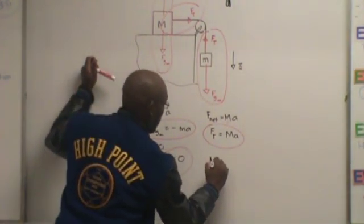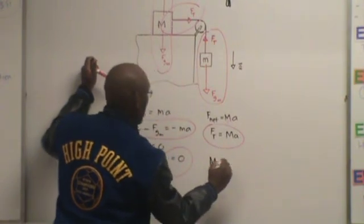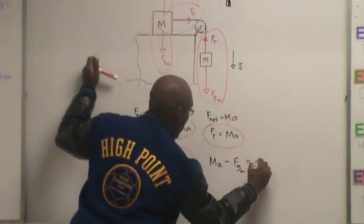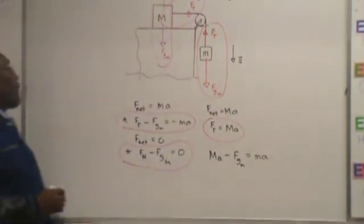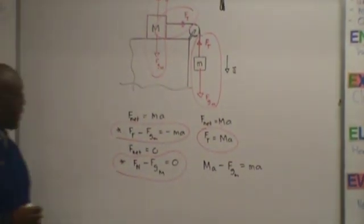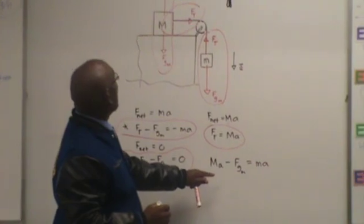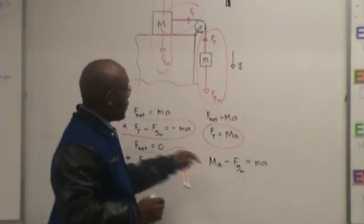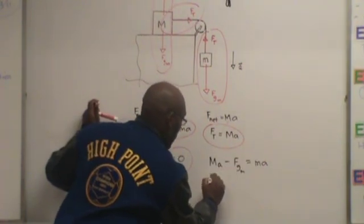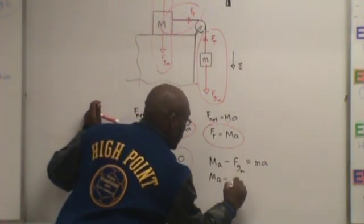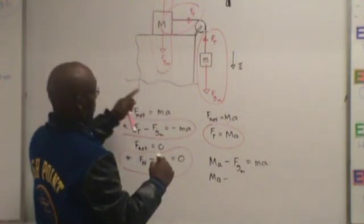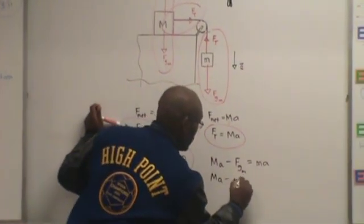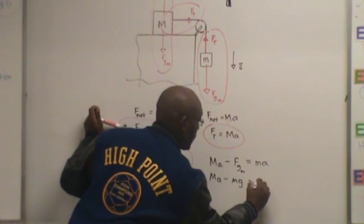And that's going to give me uppercase M times a minus Fgm equals lowercase ma. And of course we know that this here is the same thing as Ma minus m lowercase times g equals ma.